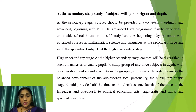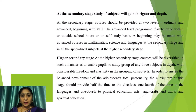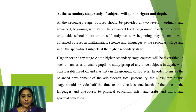At the secondary stage, courses should be provided at two levels: ordinary and advanced, beginning with class eight. The advanced level program may be done within or outside school, or on a self-study basis. A beginning may be made with advanced courses in mathematics, science, and languages at the secondary stage, and in all specialized subjects at the higher secondary stage. The Kothari Commission viewed the higher secondary stage as where courses will be diversified.